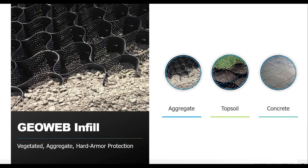The second main attribute in the geob system is the infill. There are basically three main infill types depending on the type of protection needed. With a protective system in the front fascia, you can fill it with topsoil and vegetate it, fill it with aggregate, or in instances where it's subjected to high flows and tractive forces, fill the front fascia with concrete. No matter what infill is used in the front cell, we always use free-draining aggregate in the back cells to allow for drainage and prevent pore pressure buildup.